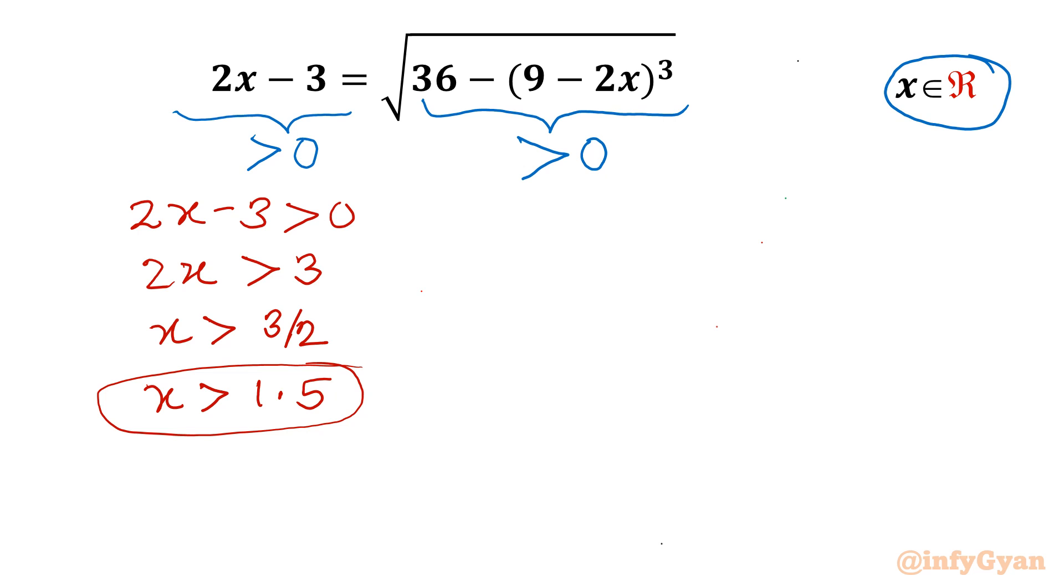Now come to RHS. 36 minus 9 minus 2x whole cube should be positive. That means 9 minus 2x whole cube should be less than 36.